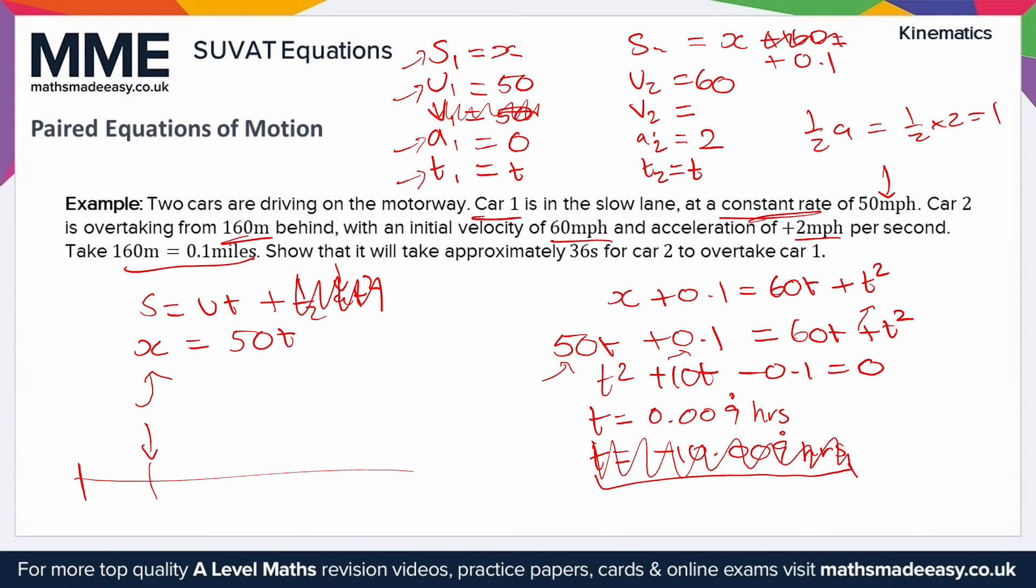We've got this in hours, but notice it says show that it'll take approximately 36 seconds. If you do 0.009 recurring times 60, that'll give you it in minutes, and then times it by 60 again, that'll give you it in seconds, which is 35.96 seconds, which is pretty close to 36. I'd say we've got it right there.